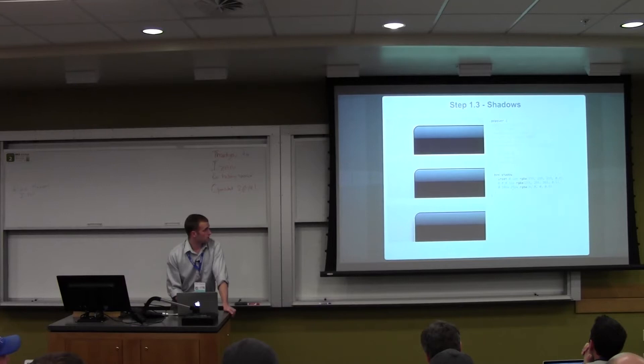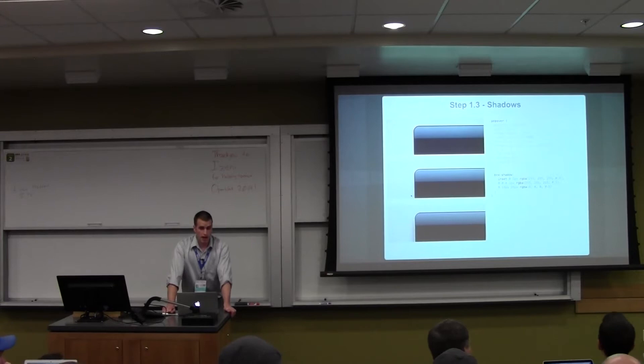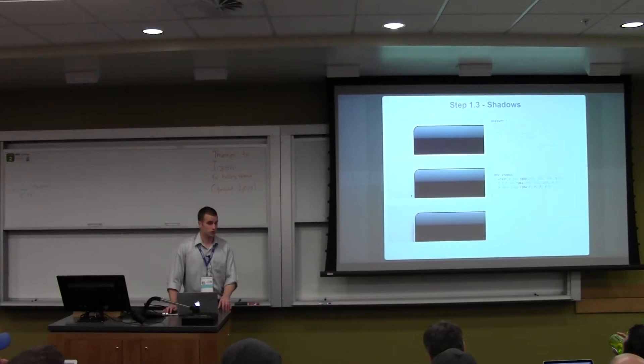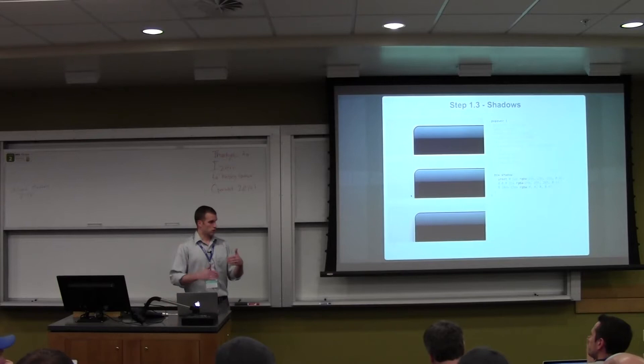For shadows, we use the box-shadow property — once again, you'd need to prefix this. That first line is an inset shadow, giving the little inset top shadow that makes the edge pop. The second line in the box-shadow is the faint white line — it's represented by the cyan line. The third line is the soft drop shadow. You can just have three separate box shadows by comma-separating them. Typically you'll see a single box shadow used, but you can have a comma-separated list of as many as you'd like.